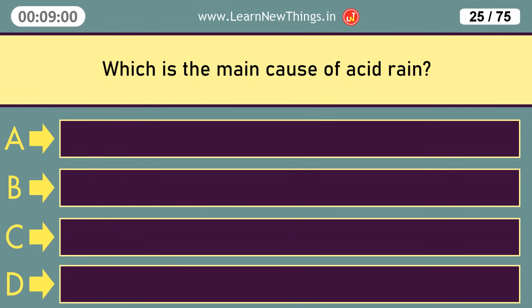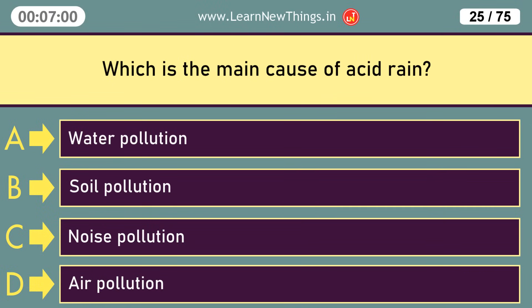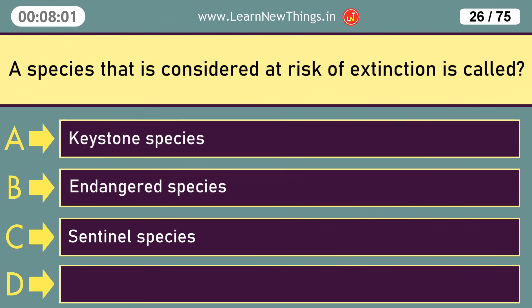Which is the main cause of acid rain? Air pollution. A species that is considered at risk of extinction is called an Endangered species.